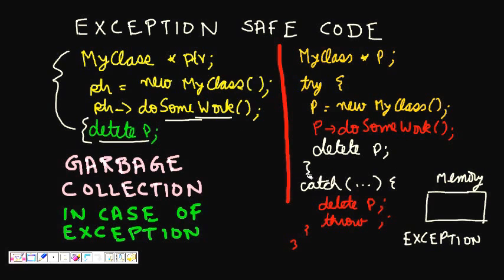Because delete is not called, I'm not able to call the destructor and cannot free any resources the code had taken. If I had taken a lock on some resource, that lock will not be released. The memory I allocated will not be returned. These are real problems in C++ even when the code looks correct — garbage collection in case of an exception is not happening.